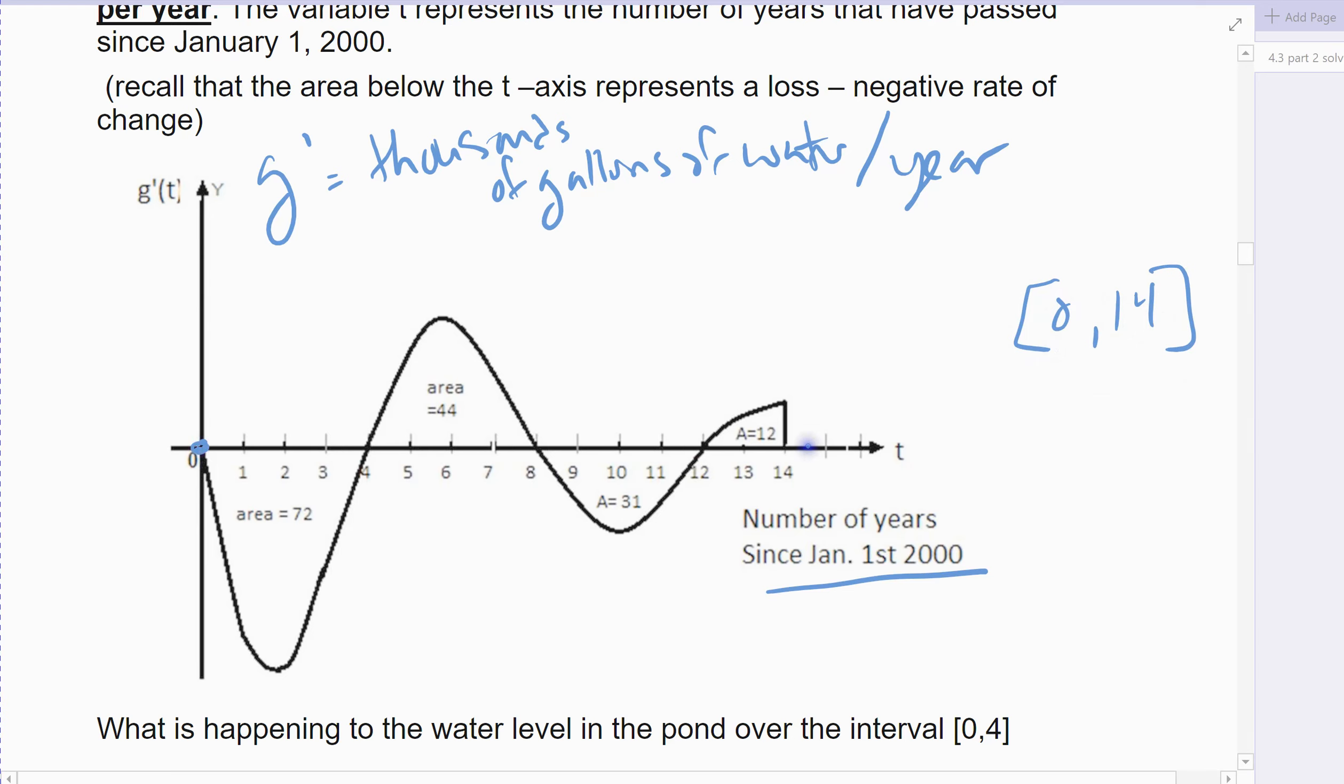We start and we stop at 14. We've got a critical value at 4, critical value at 8, and a critical value at 12. So 4, 8, and 12 would be my critical values. And then I've got gains and losses, increases and decreases in water.